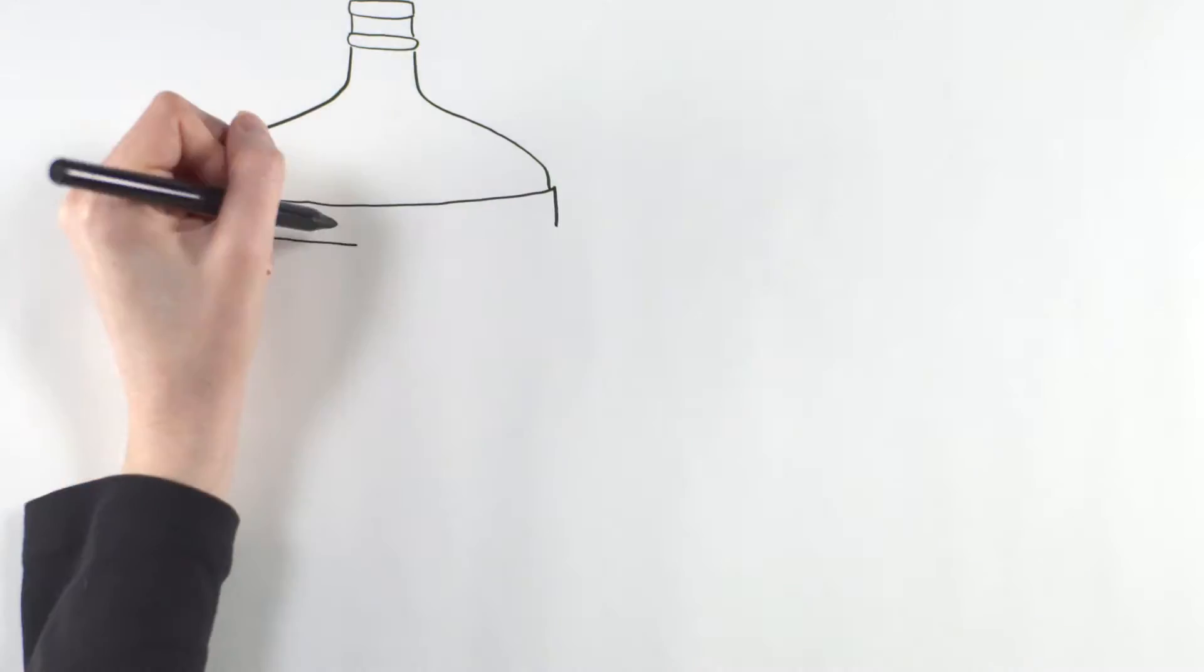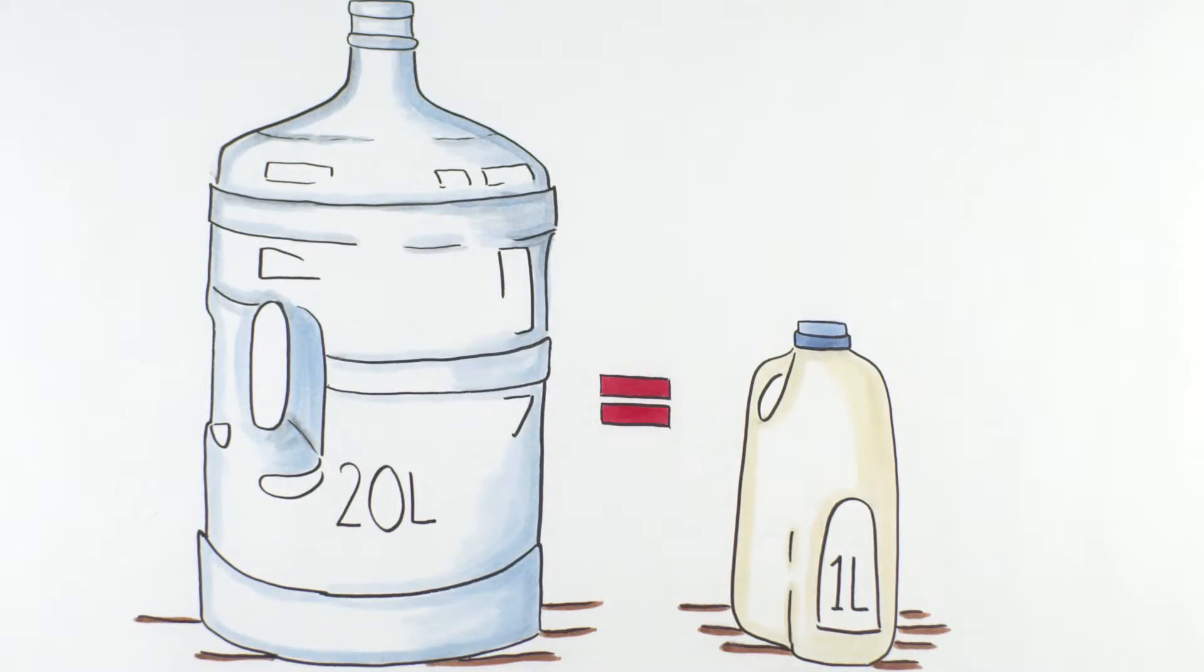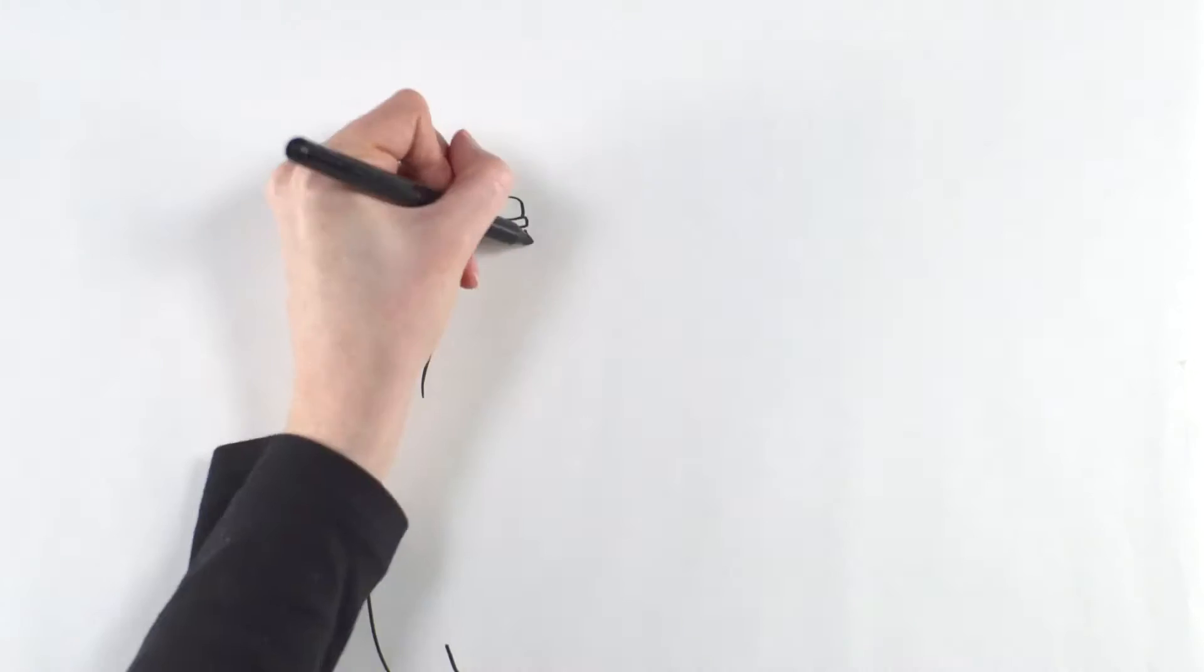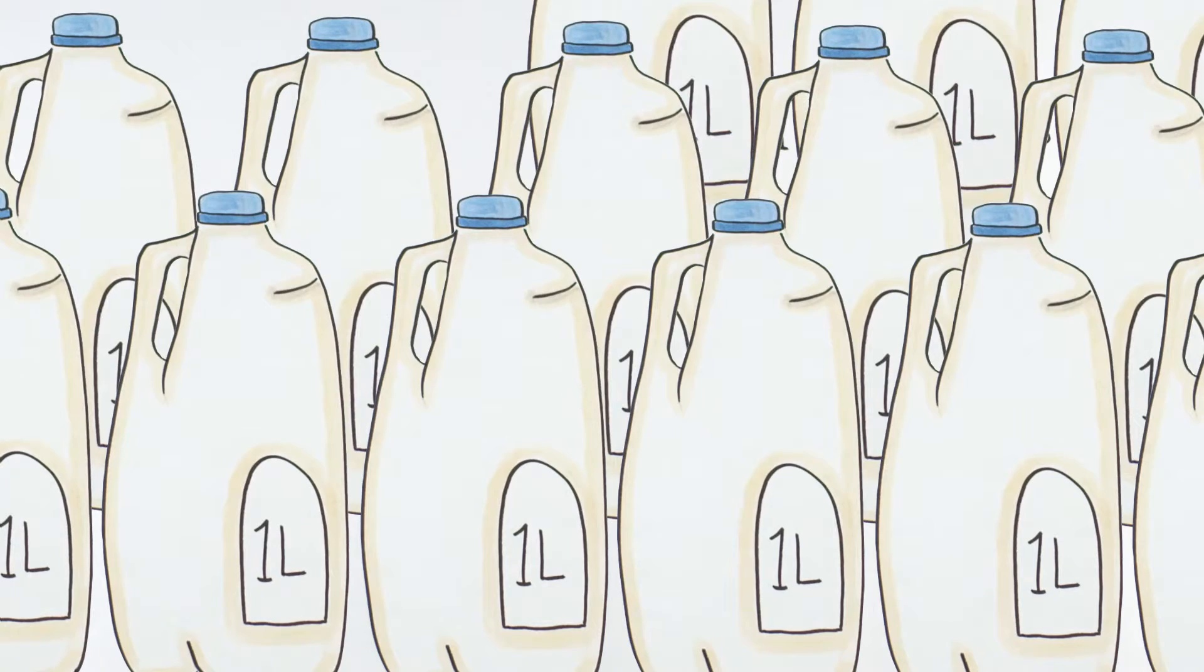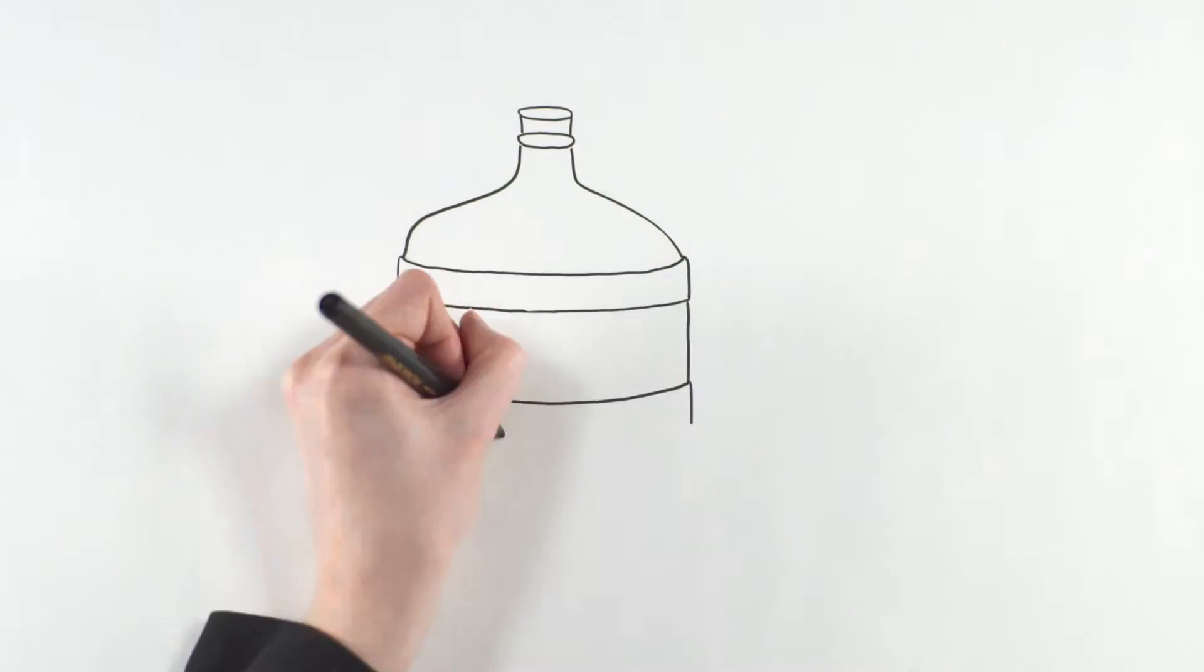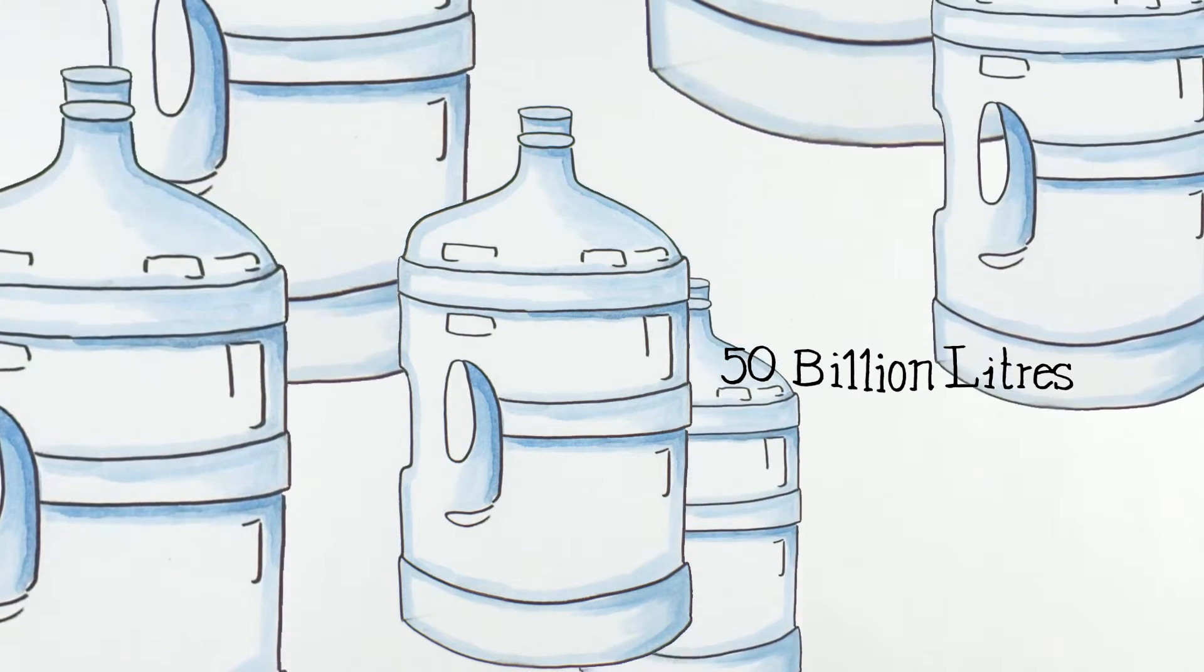The dairy farmers of Canada have said that it takes about 20 liters of water to produce 1 liter of milk. In 2013, Ontario alone shipped 2.53 billion liters of milk to processors. That's roughly 50 billion liters of water a year used in the Ontario dairy industry alone. That's a lot of water.